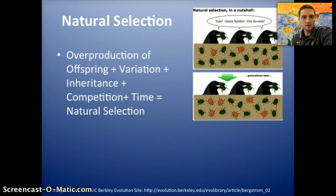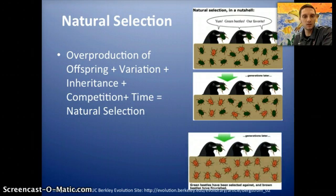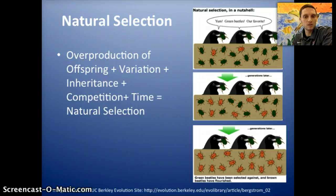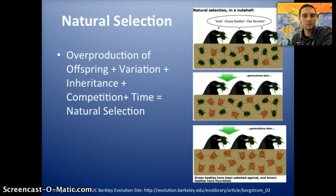That means those green beetles that are eaten are not able to pass on their genes to the next generation. So we see more and more brown beetles in that population until eventually there are all brown beetles. This is the process of natural selection — what is actually happening is that the allele frequencies for brown color in the beetles are becoming more and more common. We could say that biological evolution has happened in this case because the allele frequencies are changing.